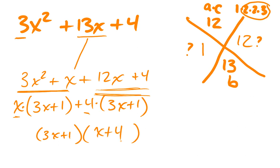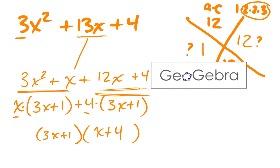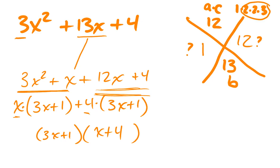And just to make sure that I'm not crazy, I always kind of pause here, and I do, 3x times x is 3x squared, and then I've got that's 12 plus 1 is 13, and 1 times 4 is 4. So, that's the factored form.